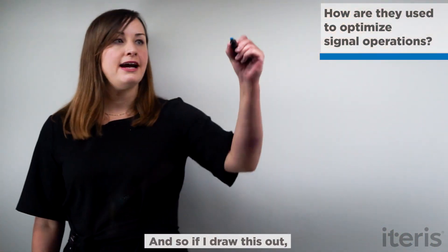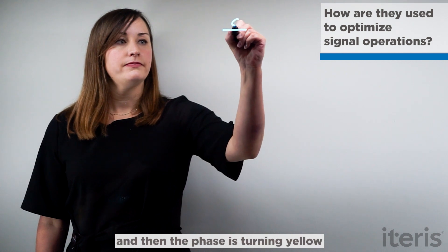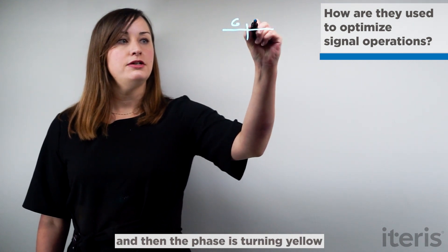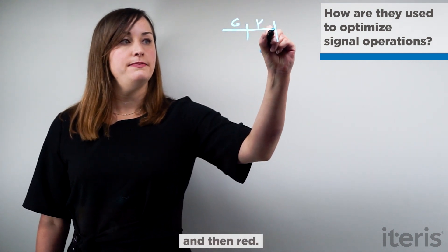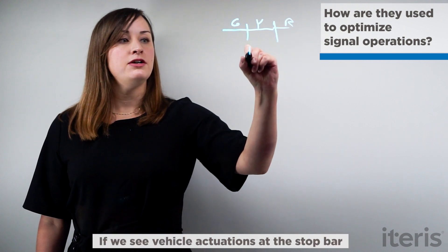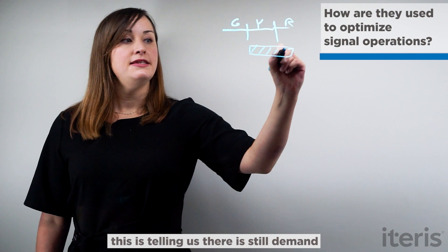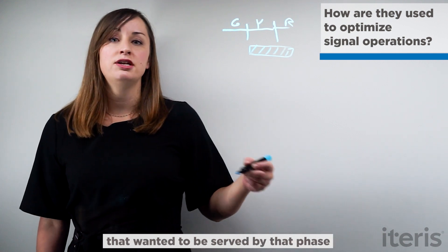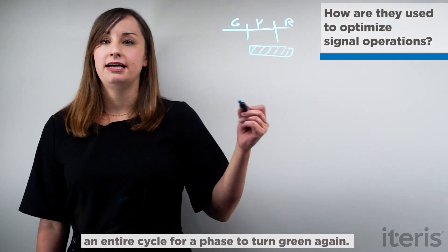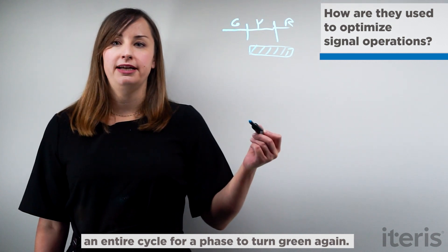And so if I draw this out, let's say this is my end of green and then the phase is turning yellow and then red. If we see vehicle actuations at the stop bar right around this vicinity, this is telling us that there's still demand that wanted to be served by that phase that's now going to have to wait an entire cycle for the phase to turn green again.